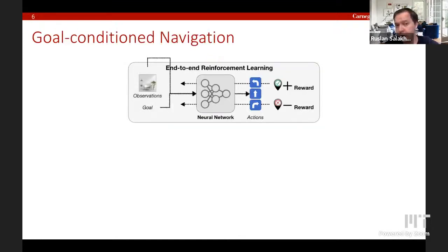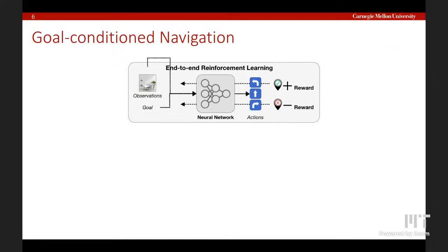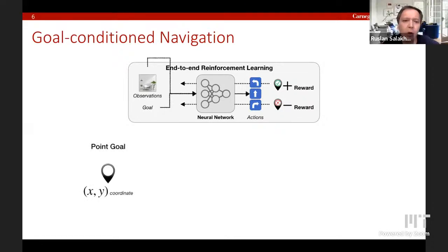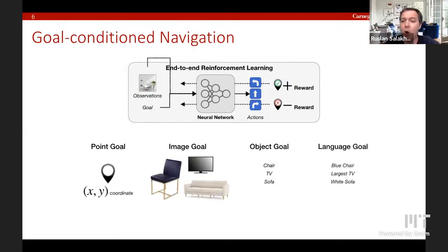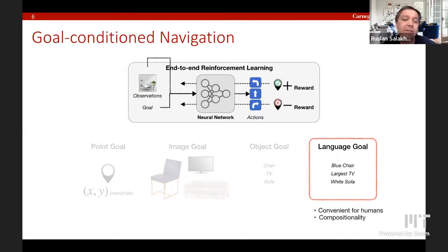We will also focus on goal-conditioned navigation, where I give you a goal — a particular observation or location to reach. The goal could be a point goal (X, Y coordinate), an image goal — very popular in computer vision — an object goal where I just tell you what to find, or a language goal. Language goals are useful because they are convenient for communicating to our agents, and you can also use compositionality with language.